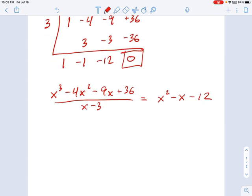I just want to write this again. I'm just going to rearrange it a little bit. x cubed minus 4x squared minus 9x plus 36. That's the top. And now I'm going to multiply both sides by x minus 3.